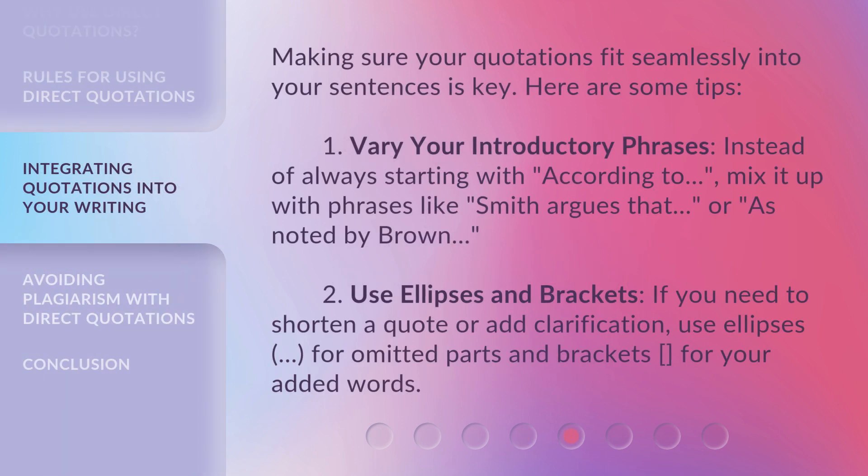Making sure your quotations fit seamlessly into your sentences is key. Here are some tips. First, vary your introductory phrases. Instead of always starting with 'according to,' mix it up with phrases like 'Smith argues that' or 'as noted by Brown.' Second, use ellipses and brackets. If you need to shorten a quote or add clarification, use ellipses for omitted parts and brackets for your added words.